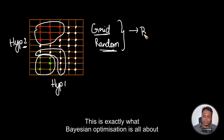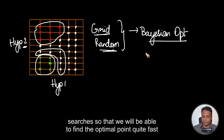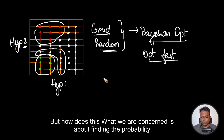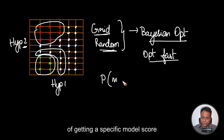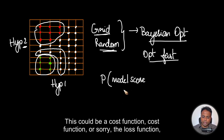This is exactly what Bayesian optimization is all about. It tries to make use of the prior information to make the subsequent searches, so that we will be able to find the optimal point quite fast. This is the fundamental idea behind Bayesian optimization.